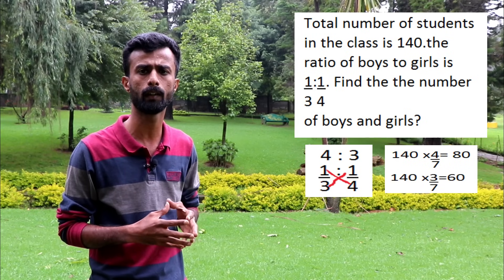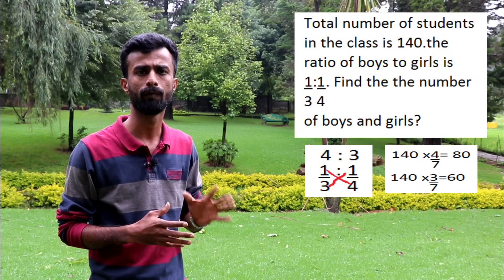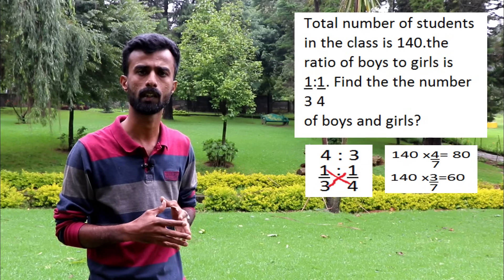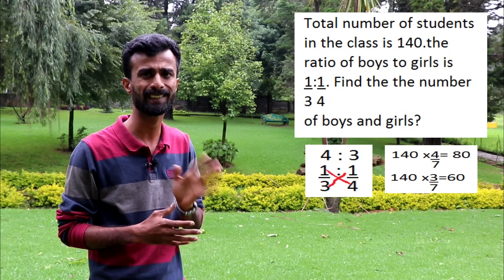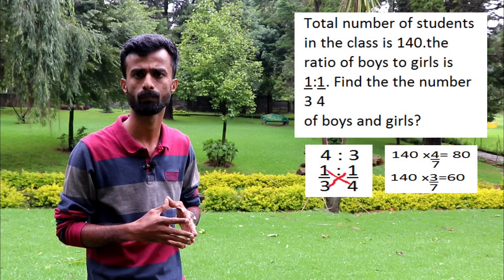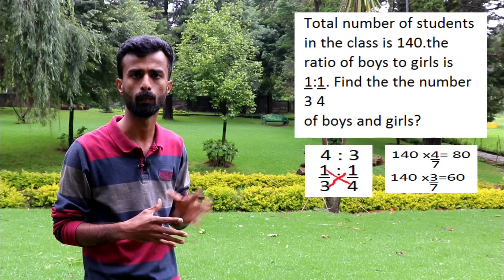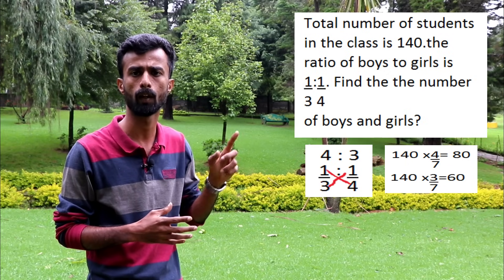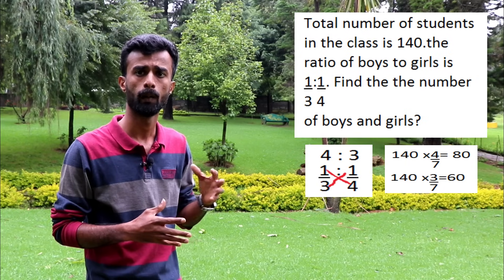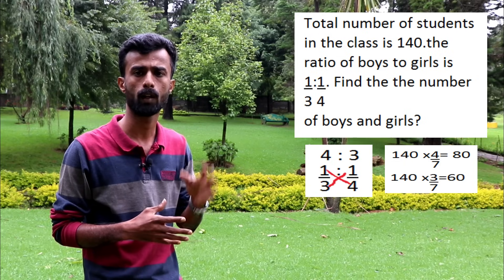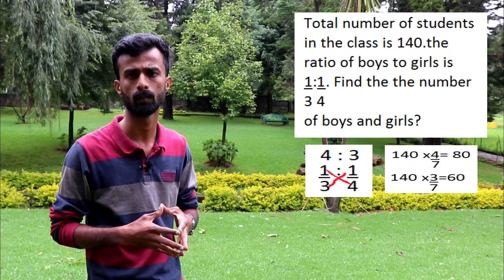The ratio is 1 by 4. So if we take 1 by 4, or 4 by 4, we bring the ratio in the same format — 3 by 7. We have boys: 40 boys, 4 boys, 20, 4, 80. Girls: 60. So 60 to 80, we have the answer to the question.